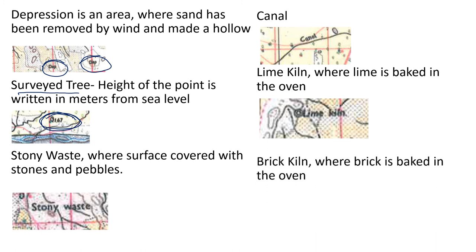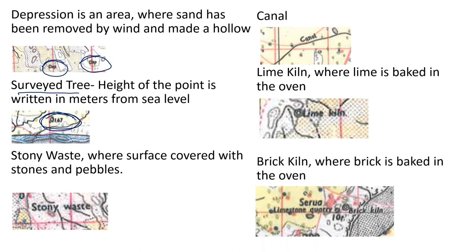Brickkiln is where brick is baked in an oven and it will be written on the map. Here we can see brick kiln written, and here lime kiln is written. Limestone quarry indicates where limestone is mined in the area, so you can say that a mining activity is happening. If a question comes about the occupation for a particular place like Sivua, you can infer it from these symbols.